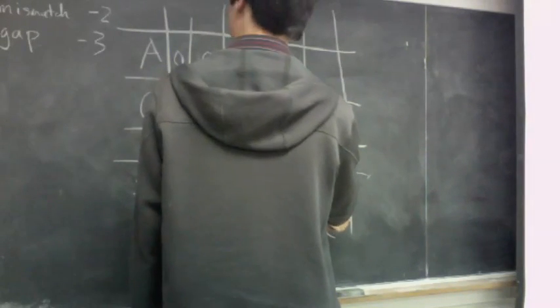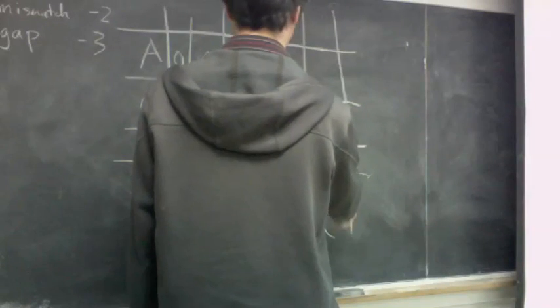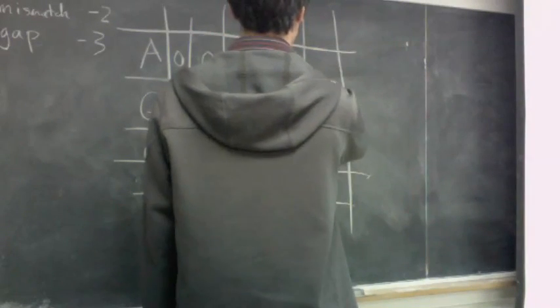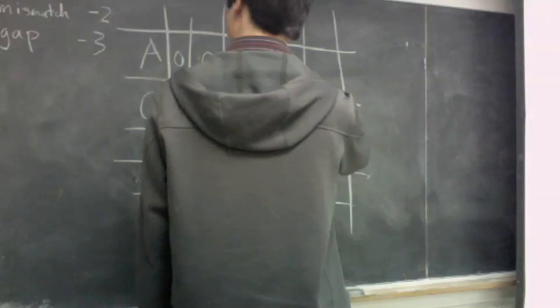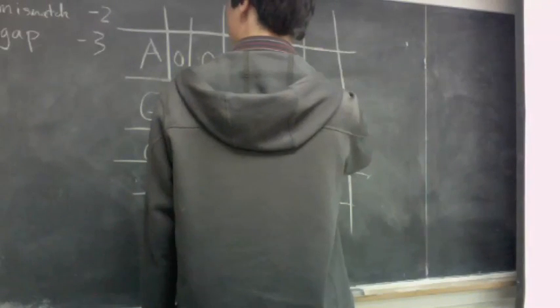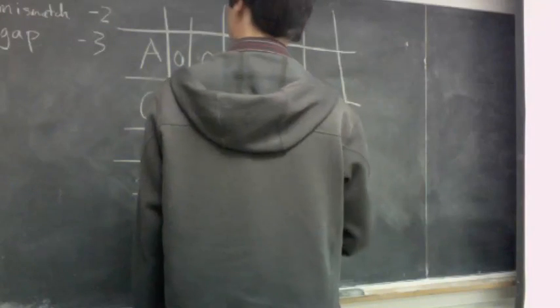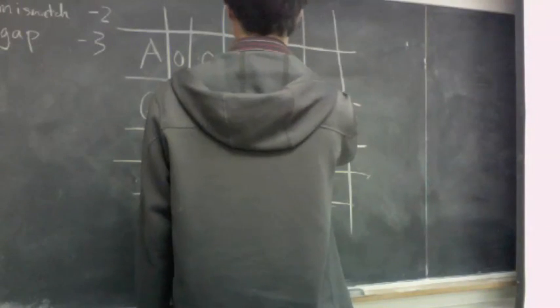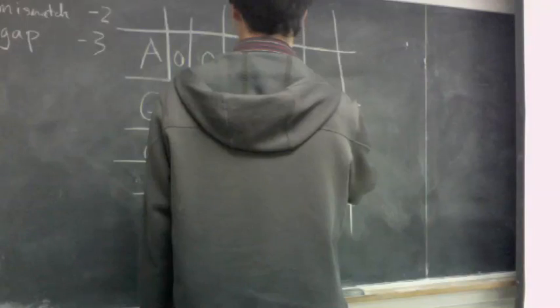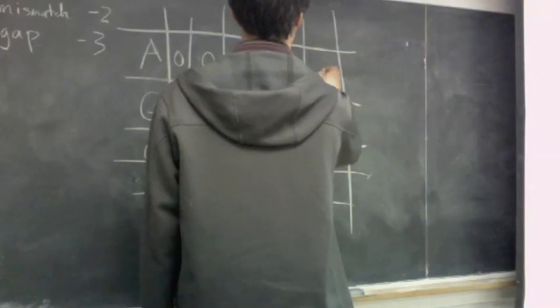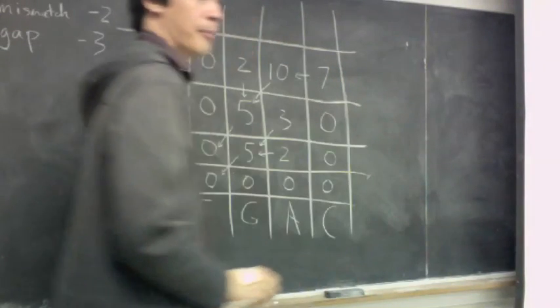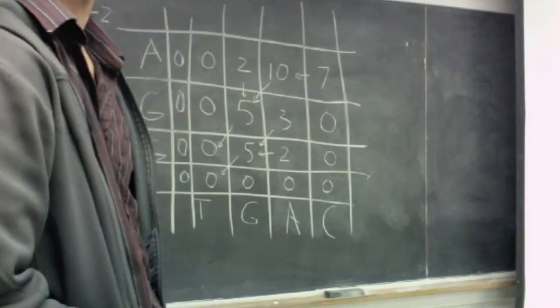And then our final score here, C versus A, that would be a mismatch in minus two plus three would give us positive one, but if we take the horizontal here, we can get a gap on top of a positive ten to give us a seven. We've now finished filling in our matrix.